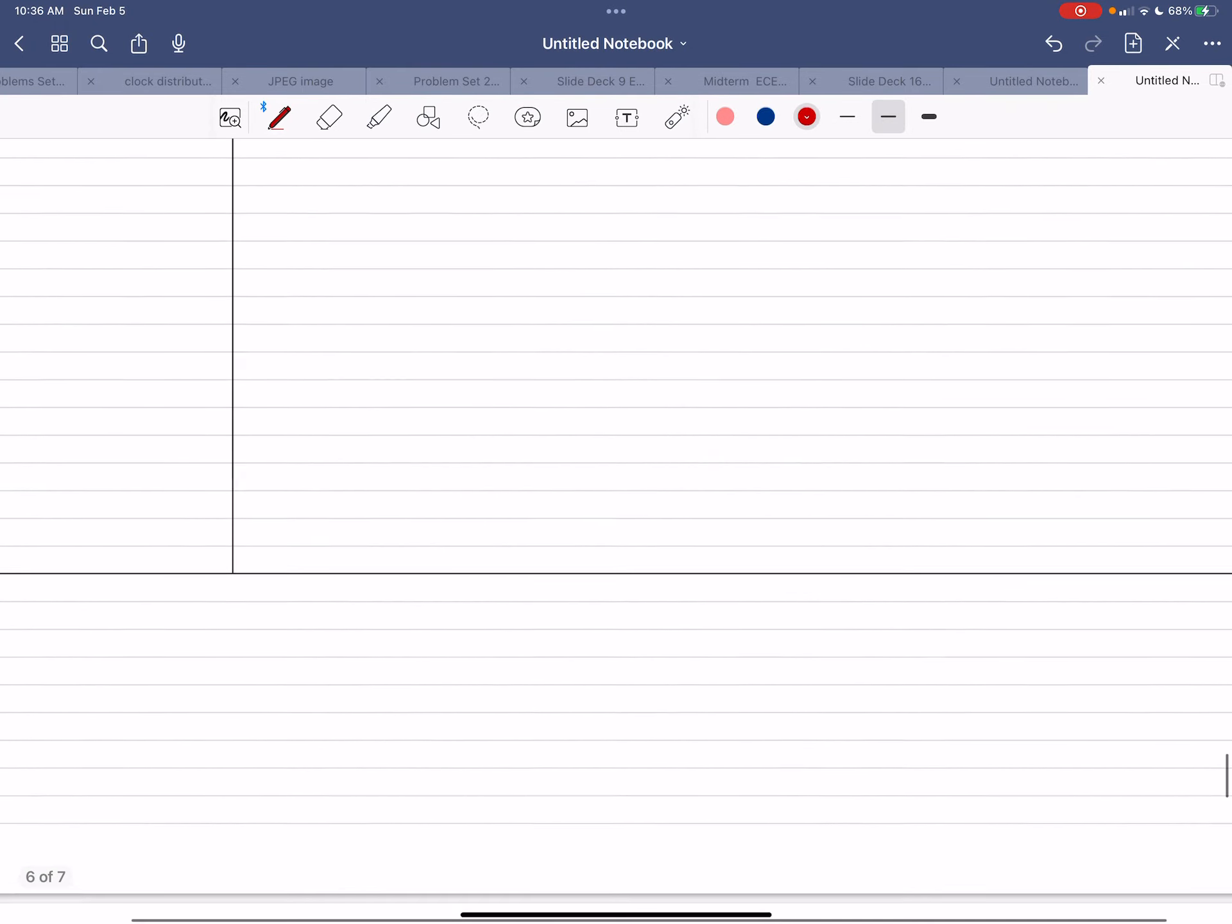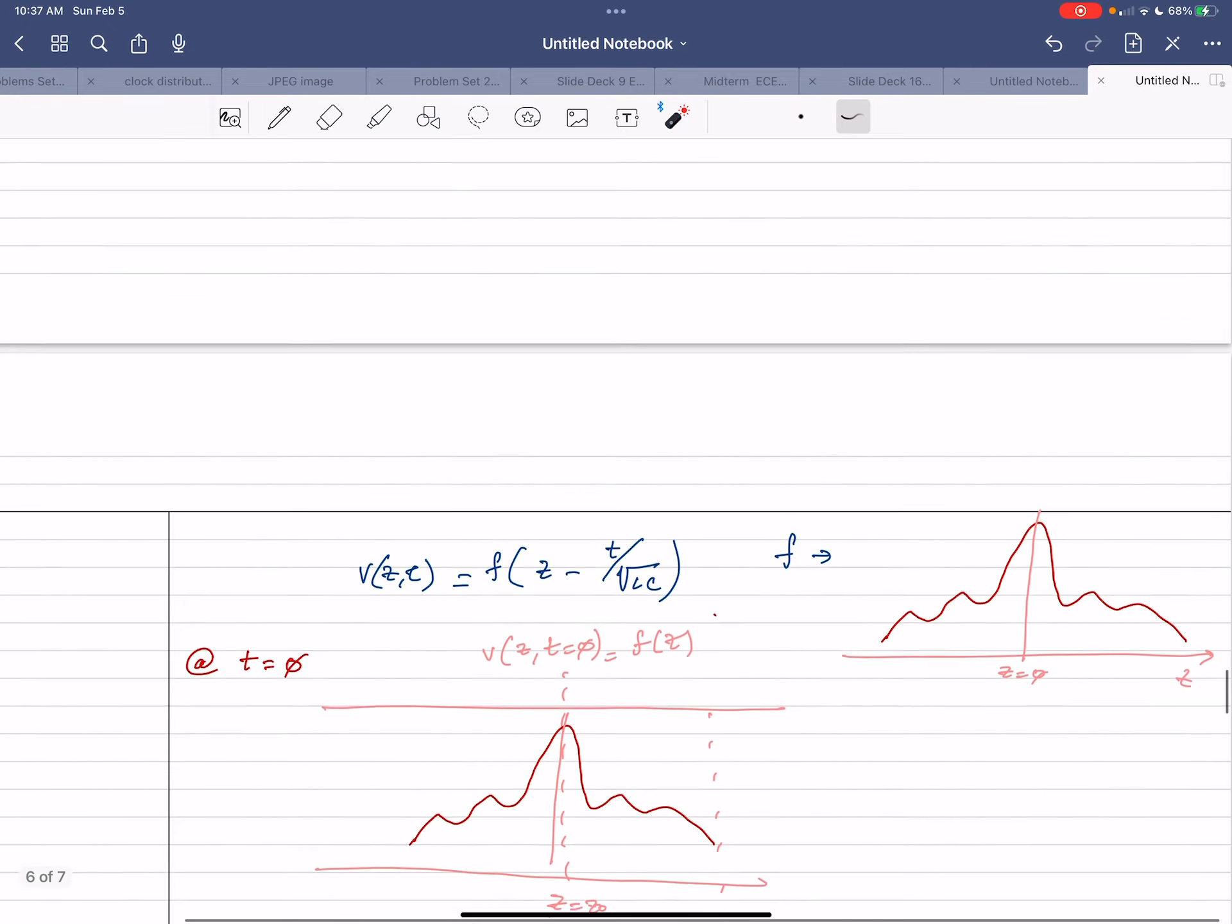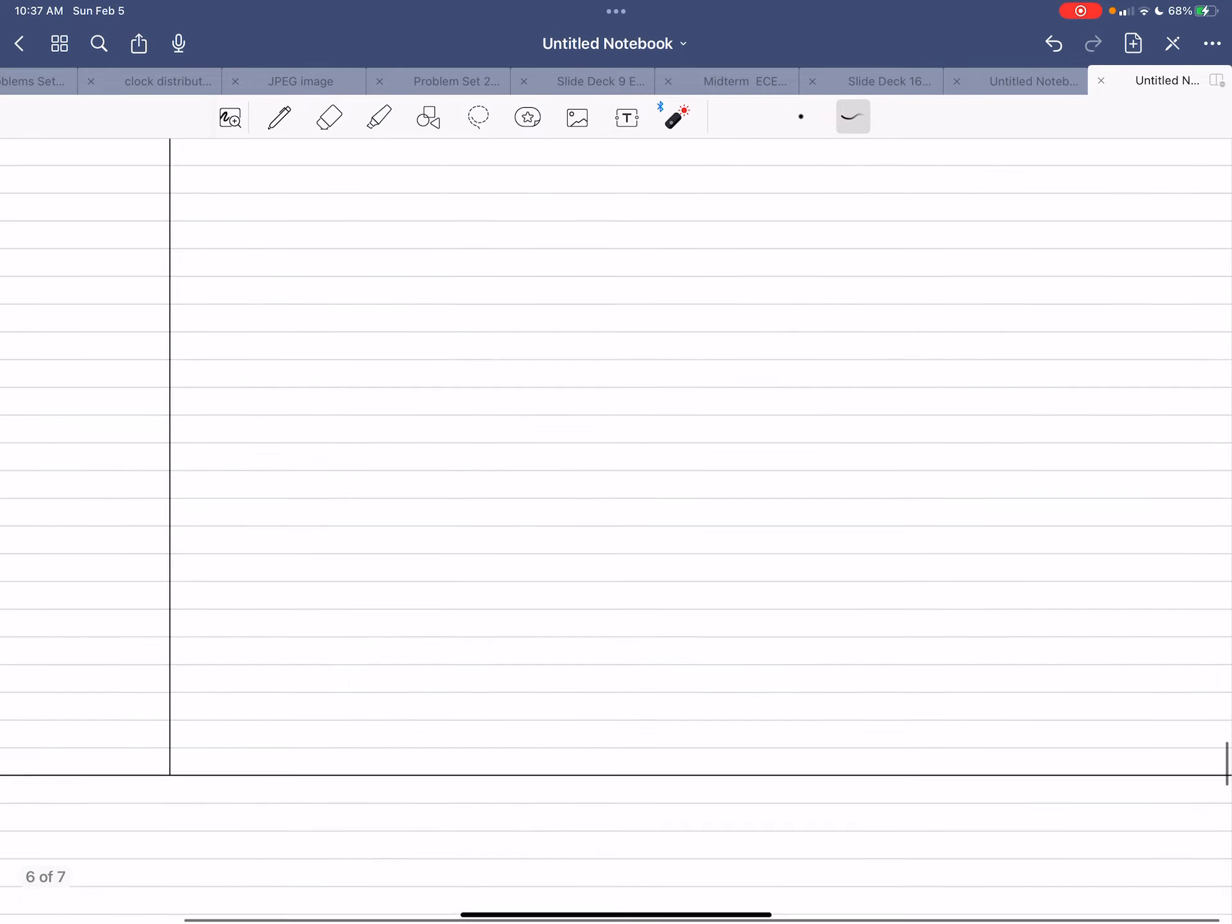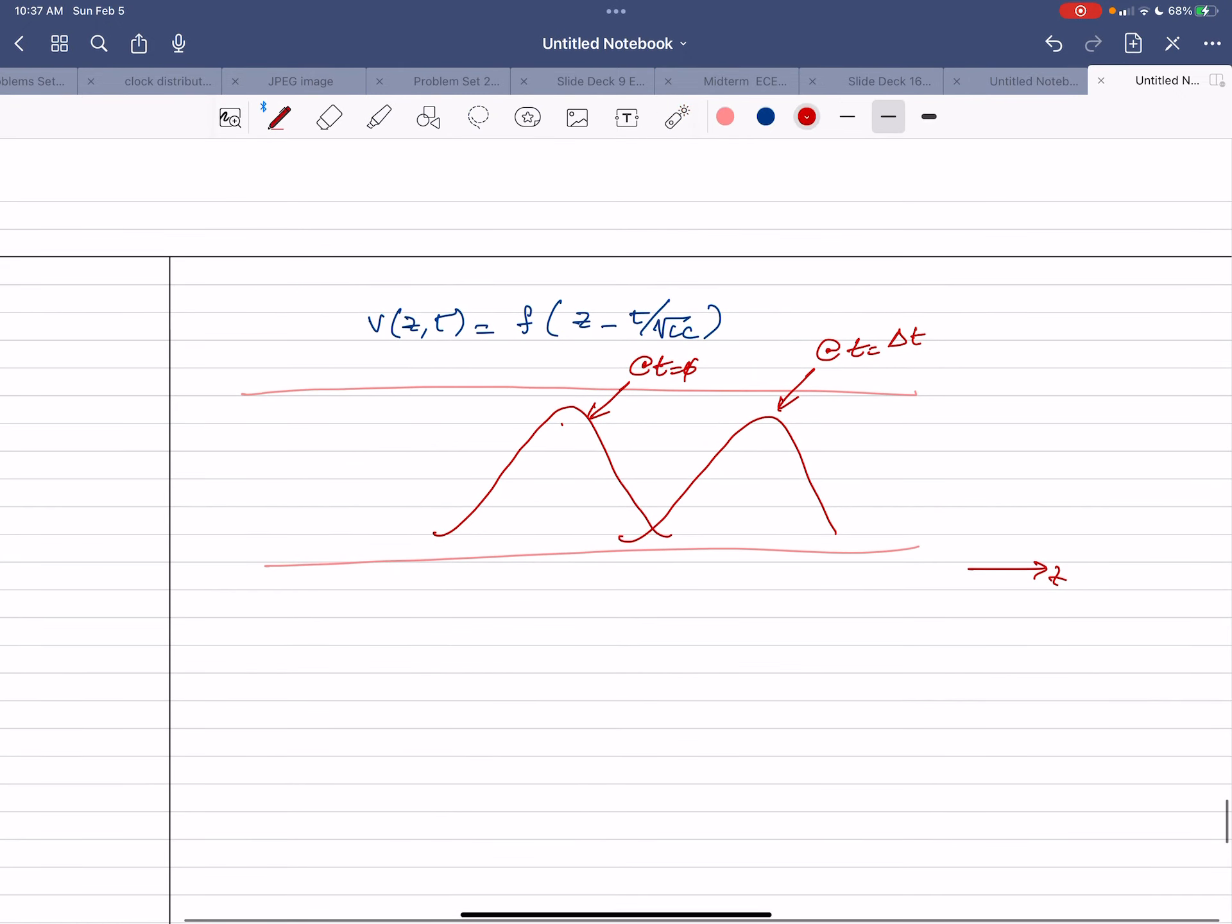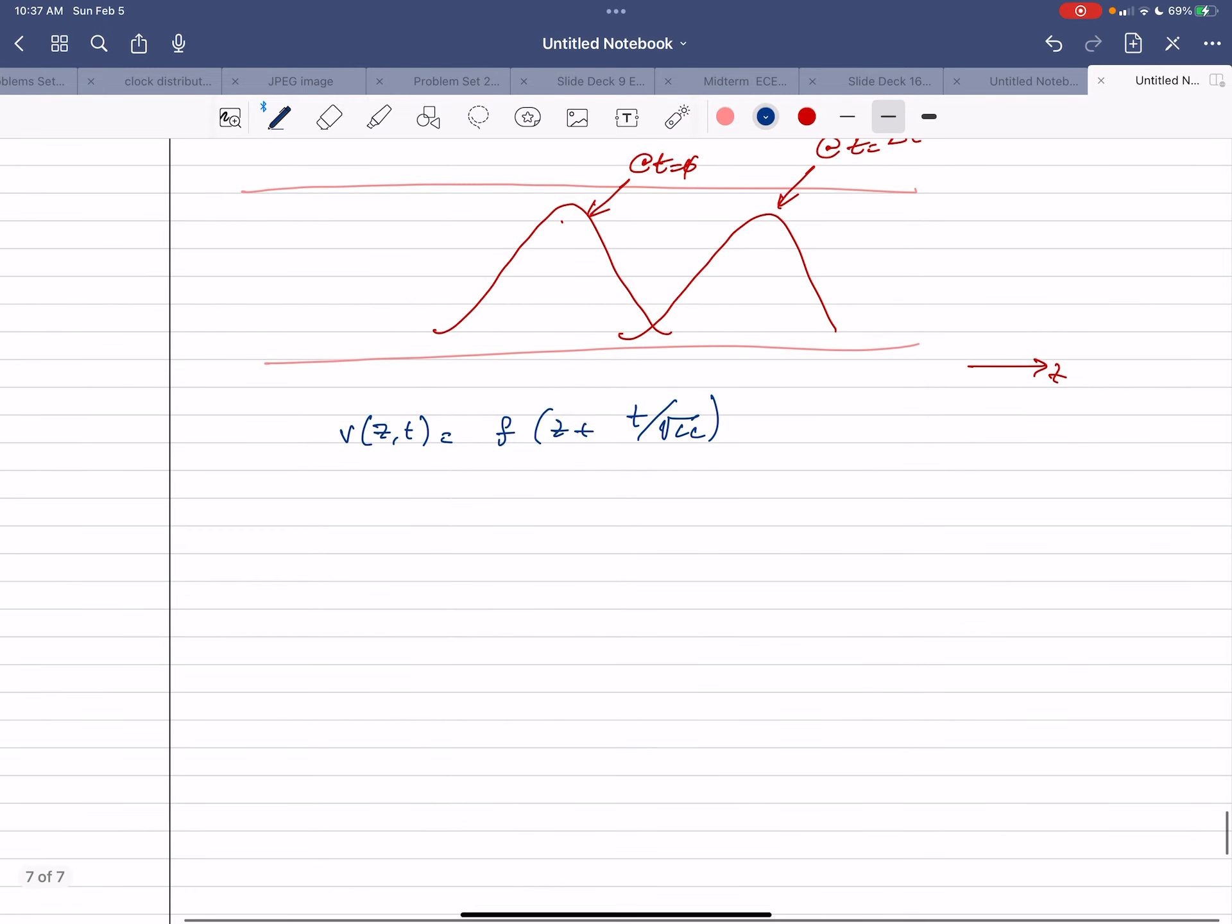But like I mentioned, so this is a possible solution for this, which is z minus t over square root of LC. So this could be a solution. But then you could also have a solution of t plus square root of LC. So now let's see what happens, because that's also a possible solution.